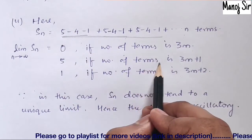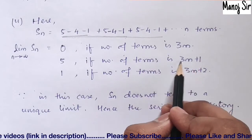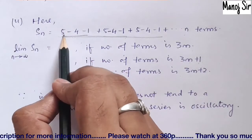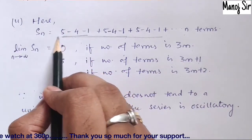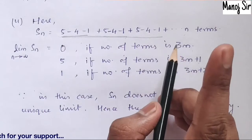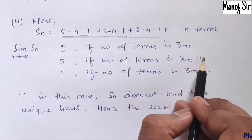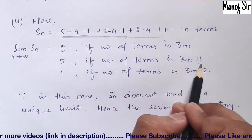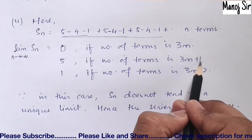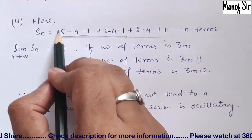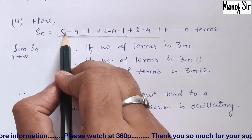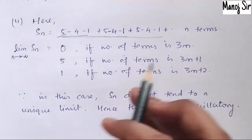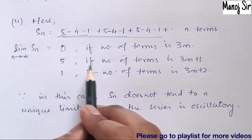Case 2: the number of terms is n = 3m + 1. The last term is 5. All the remaining 3m terms sum to 0, and you are left with that last term. So the sum will be 5 when the number of terms is 3m + 1.